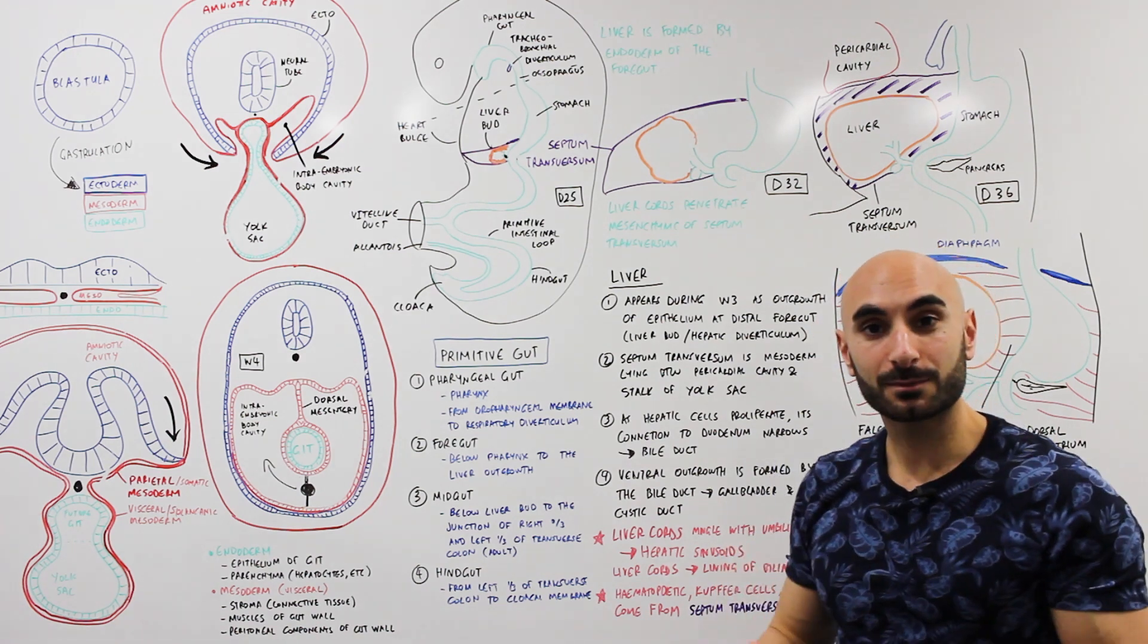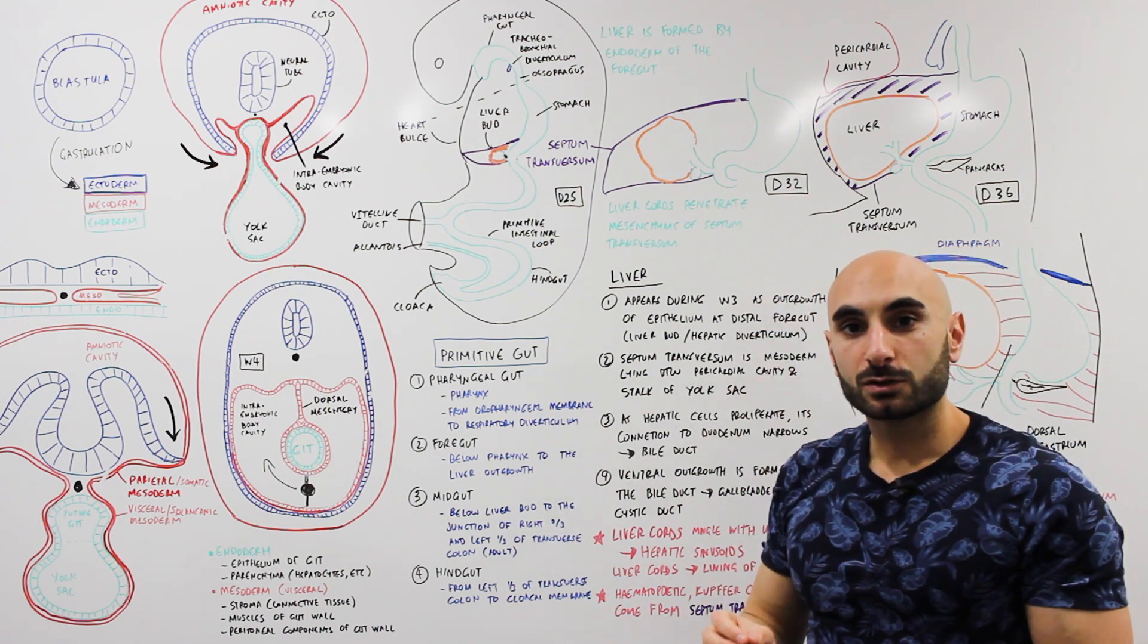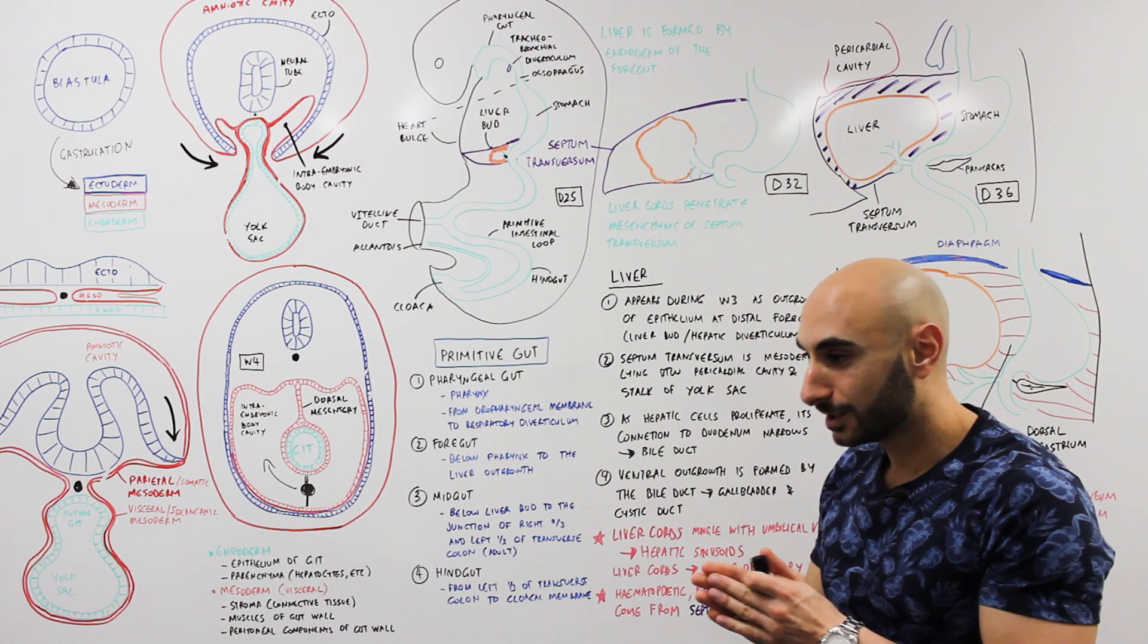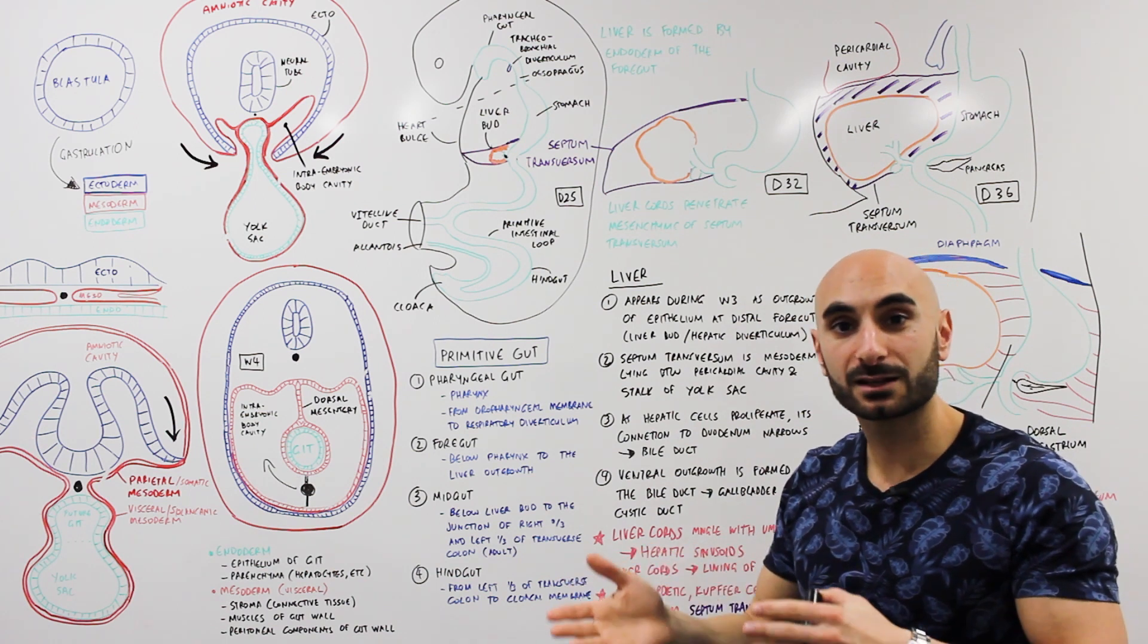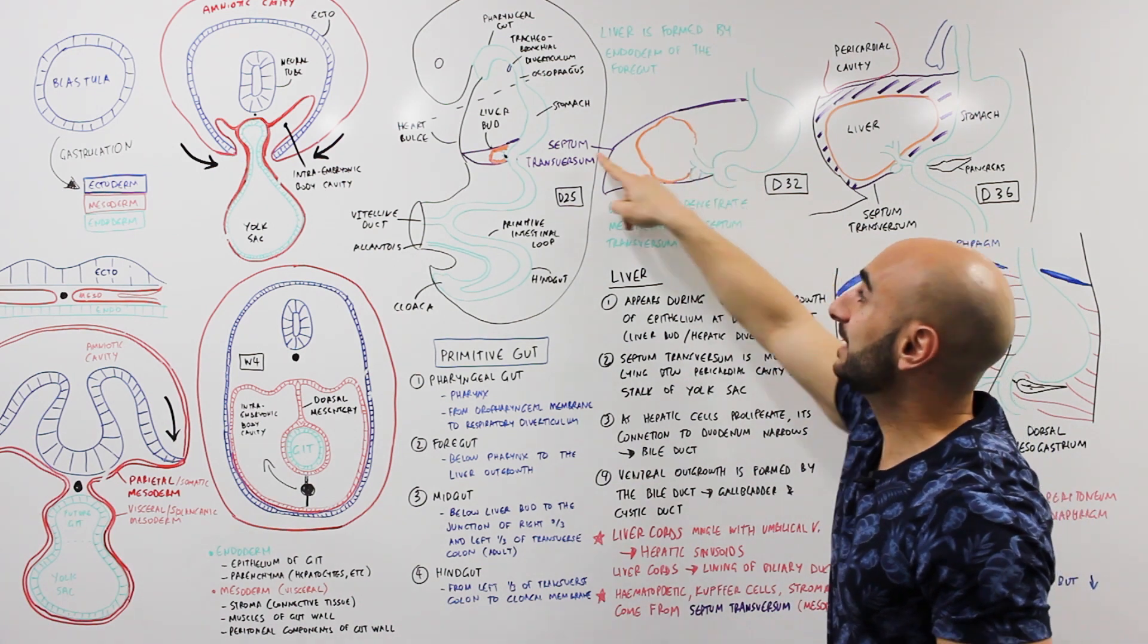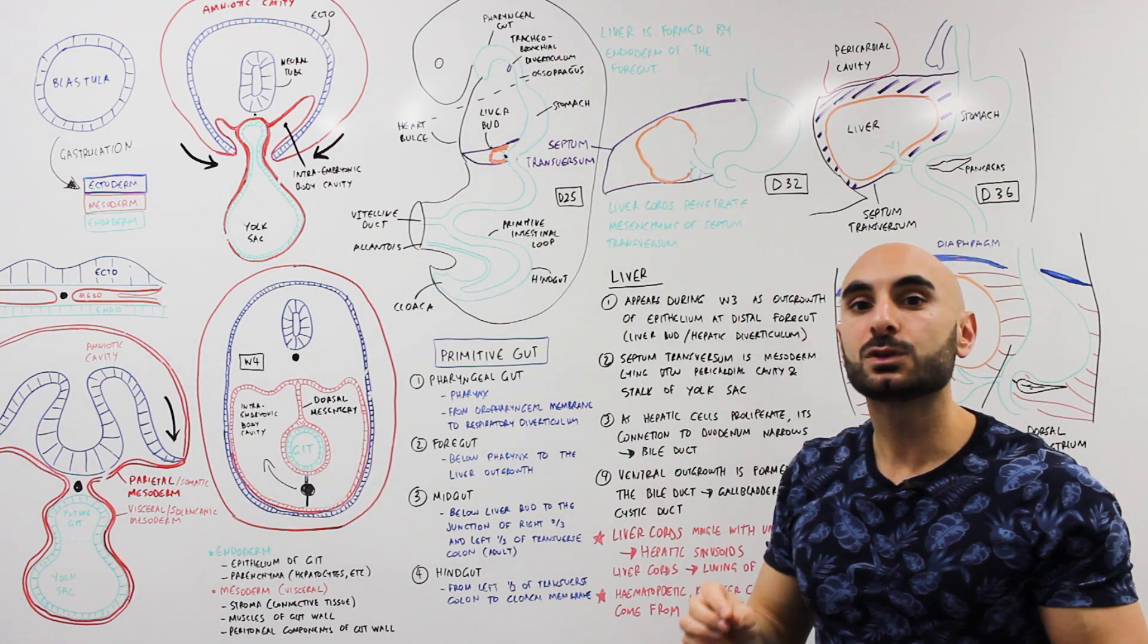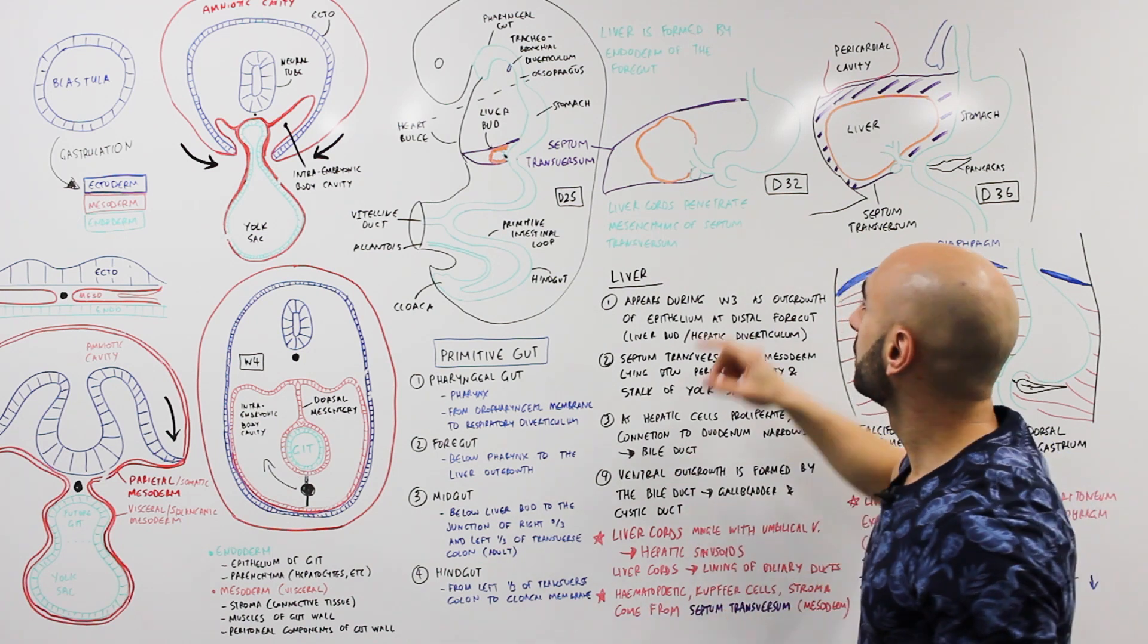So just a quick summary: epithelial cells of the endoderm will pop the liver bud out. If you want to sound smart, the liver bud is also known as hepatic diverticulum. The liver grows into the septum transversum which is mesoderm, it's just tissue.